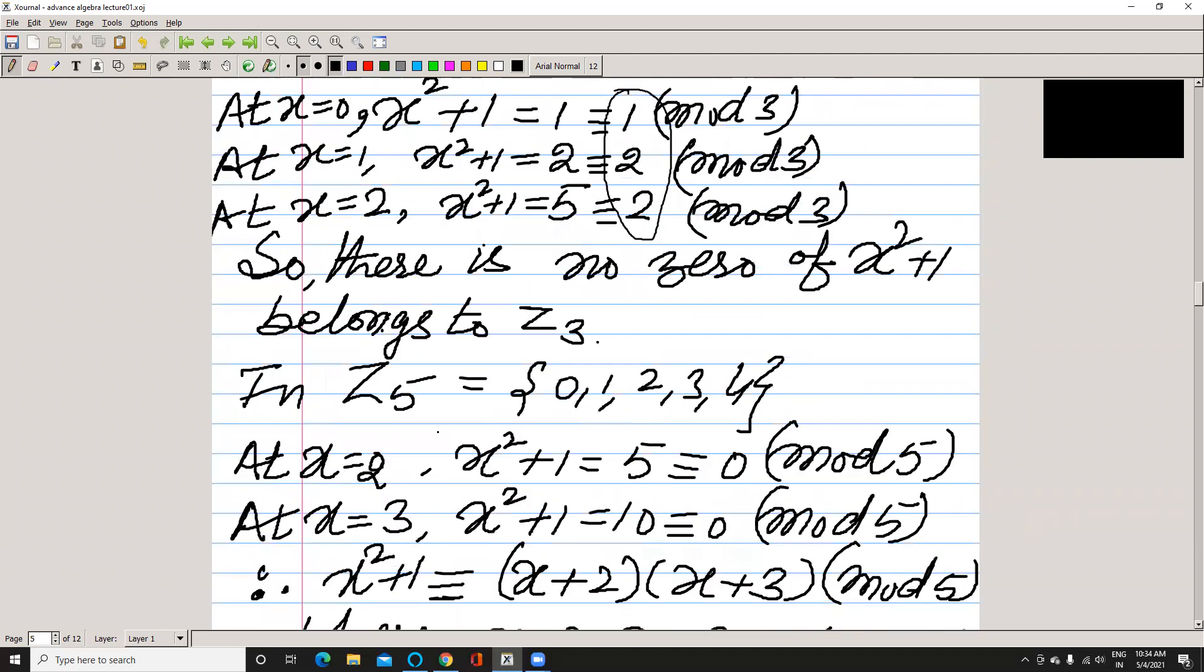Now come to Z₅. You see Z₅ has these elements: 0, 1, 2, 3, 4. After putting x = 2 in this polynomial, we get 0.